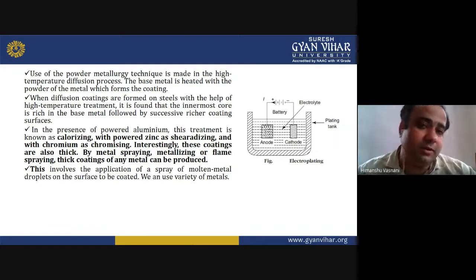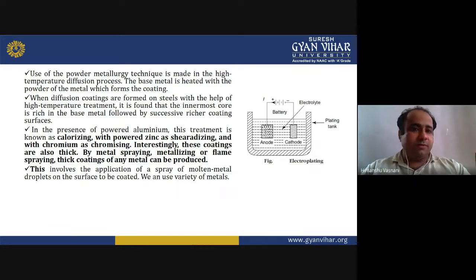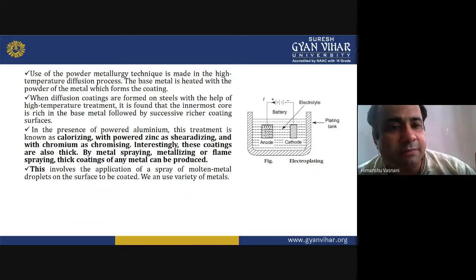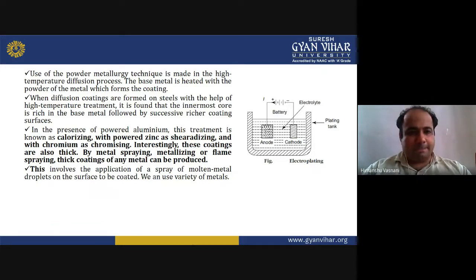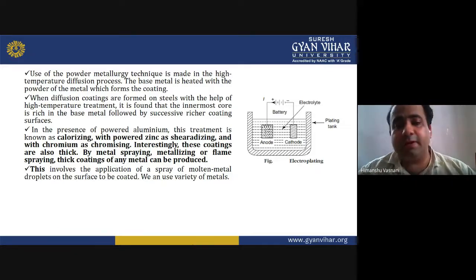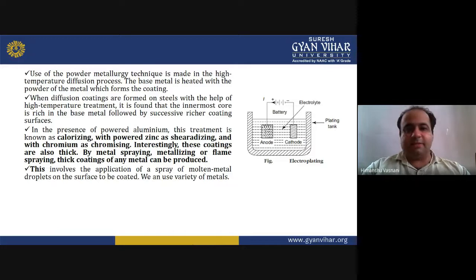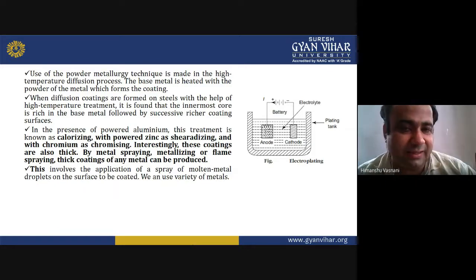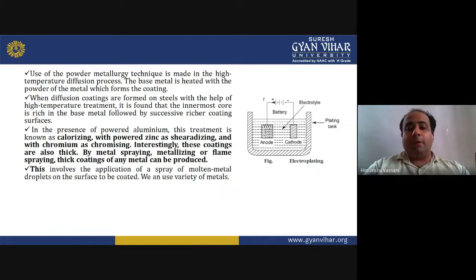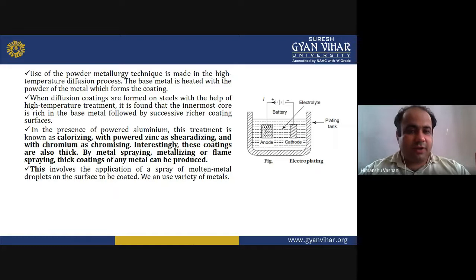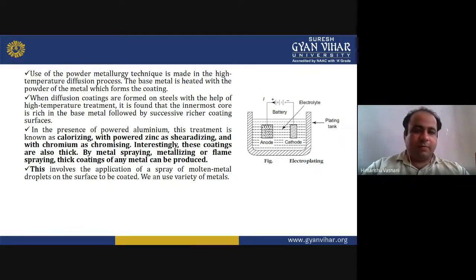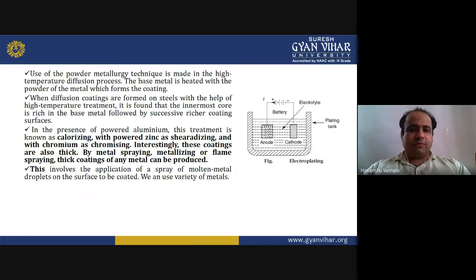The powder metallurgy technique is used in the high-temperature diffusion process. The base metal is heated with the powder of the coating metal. The innermost core is rich in the base metal, followed by successively richer coating layers. In the presence of powdered aluminium, the treatment is known as calorizing; with powdered zinc as sherardizing; and with chromium as chromizing. Thick coatings of any metal can also be produced by metal spraying, metallizing, or flame spraying.